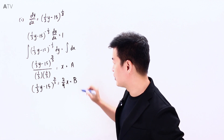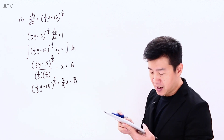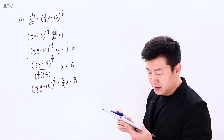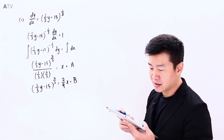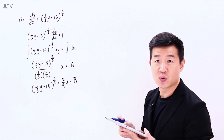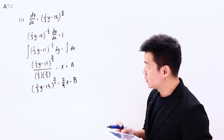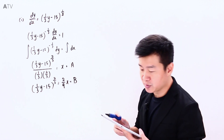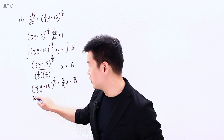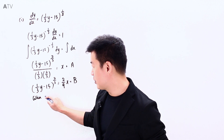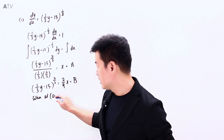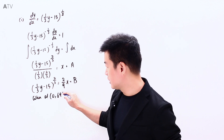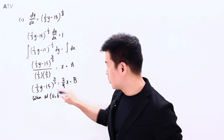I'm going to rewrite that as another arbitrary constant B. Since the question tells us the curve passes through the point (0, 69), when x equals 0, y equals 69. Let us substitute those coordinates into the equation.